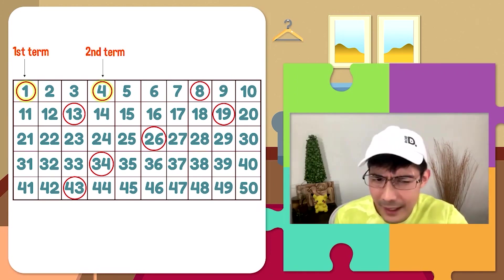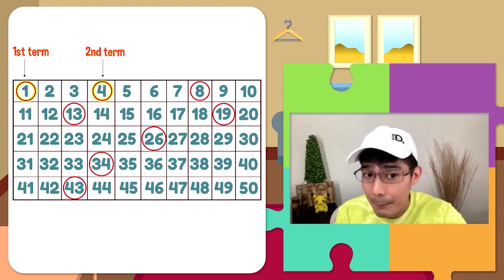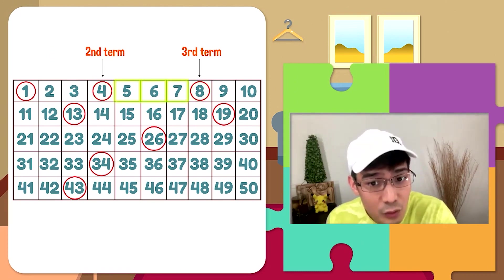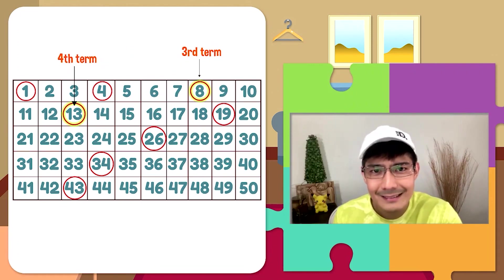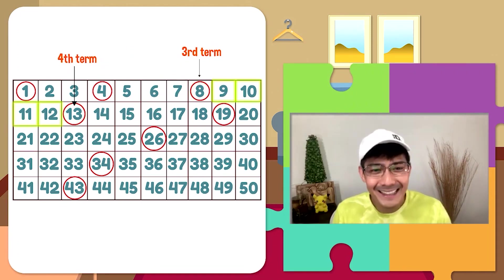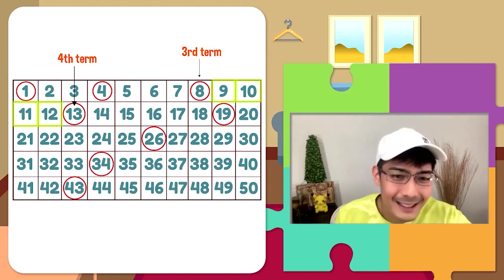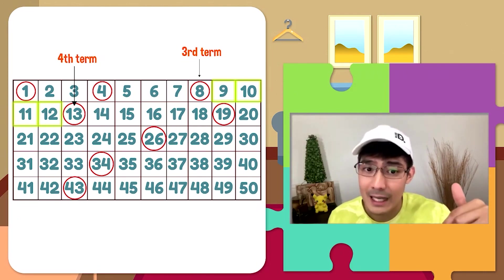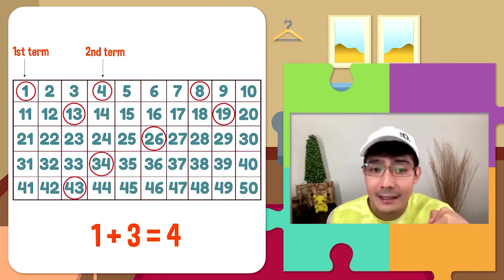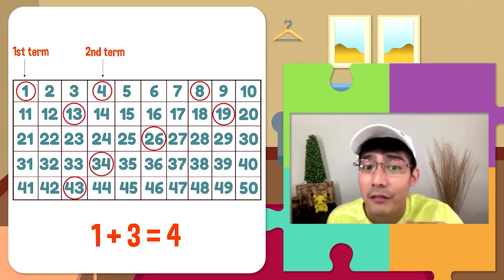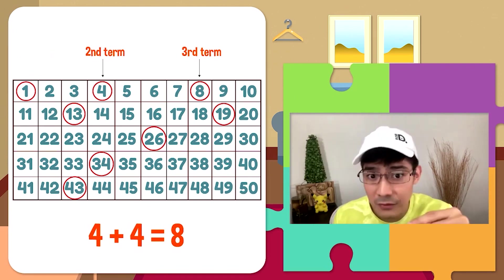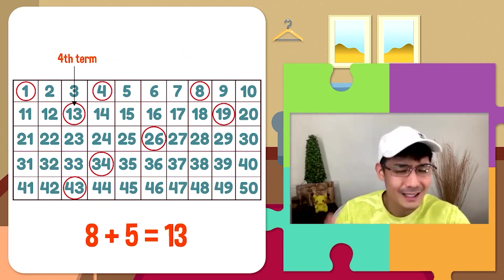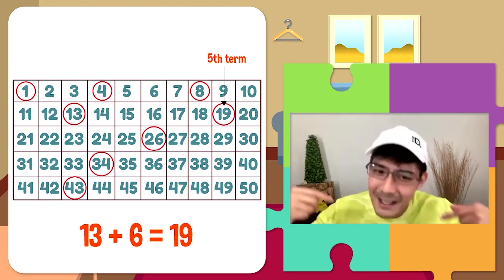Mula sa ating 1st at 2nd term, parang may dalawang numbers sa pagitan ito. Pagkatapos from 2nd term to 3rd term, may tatlong numbers na pagitan. And from 3rd to 4th term, may apat na numbers na pagitan. Nadaragdagan ng isa habang tumatagal. Para mahanap ang 2nd term, we add 3 sa 1st term, kaya ang 2nd term natin ay 4. To find the 3rd term, we add 4, at dahil dyan makuha natin 4 plus 4 is 8. To get the 4th term which is 13, we add 5. To get the 5th term, we add 6. To get the 6th, we add 7.